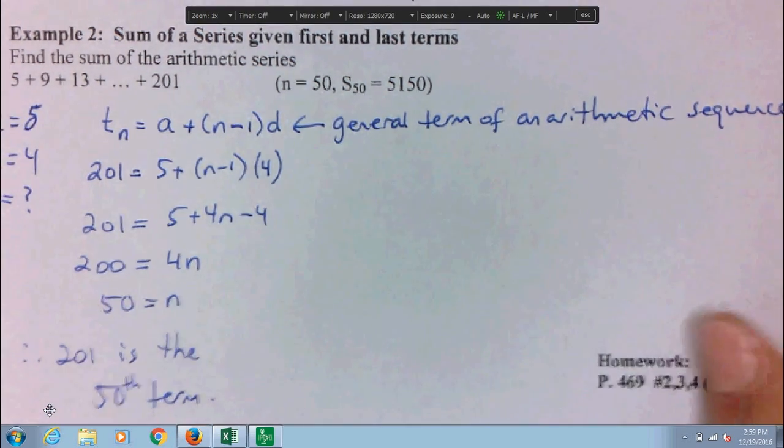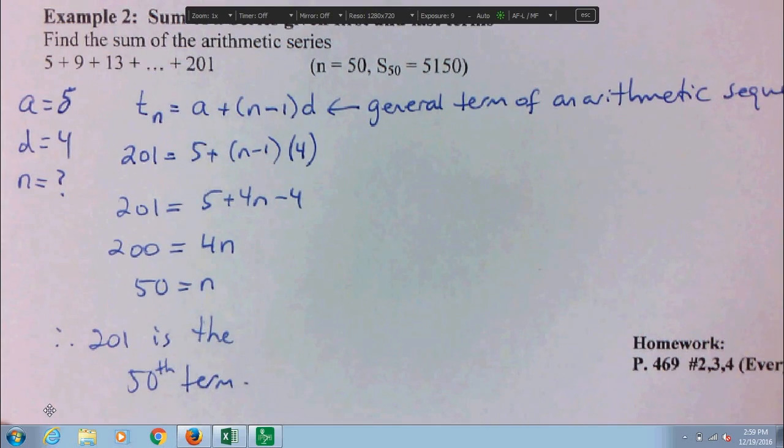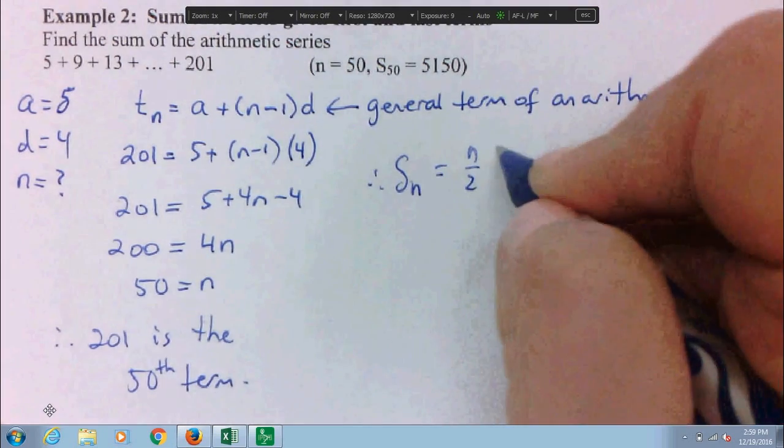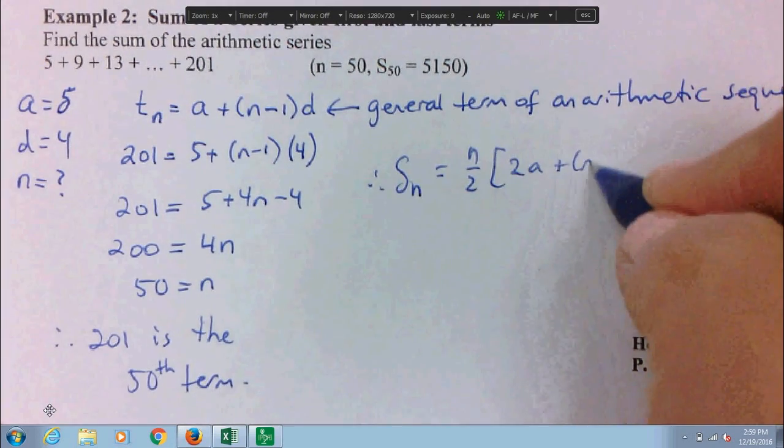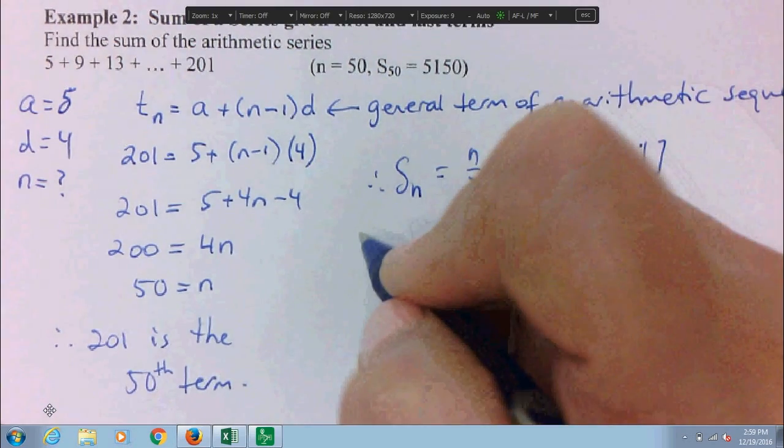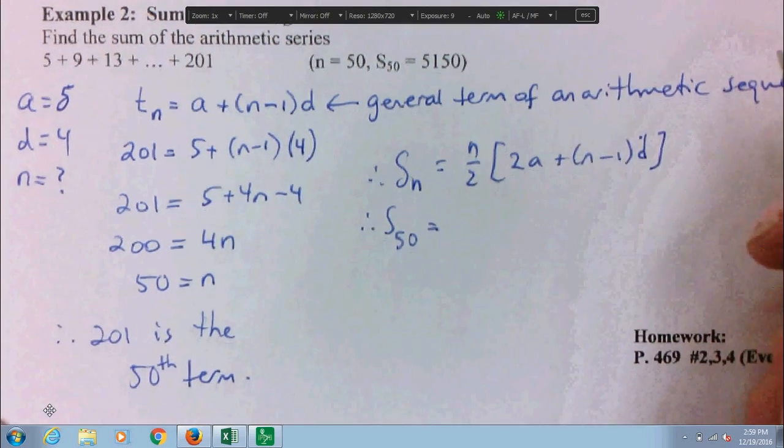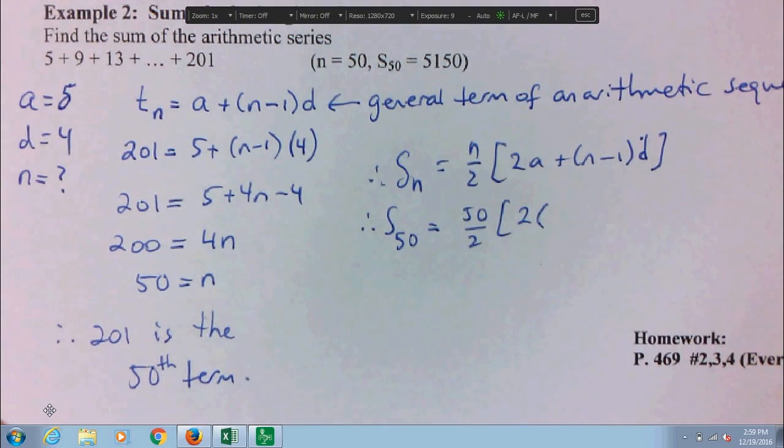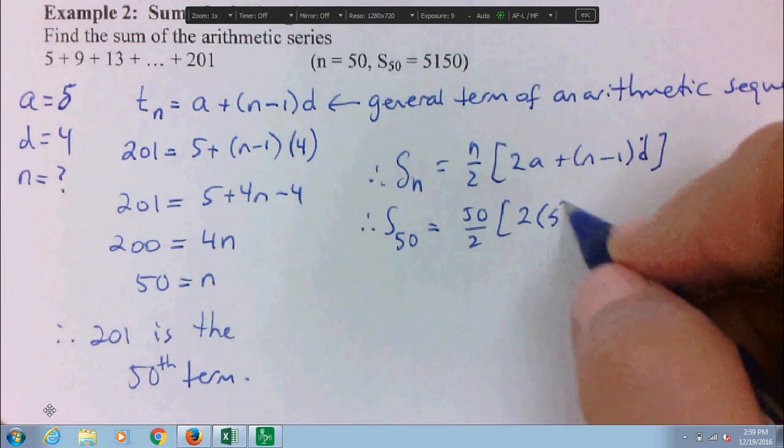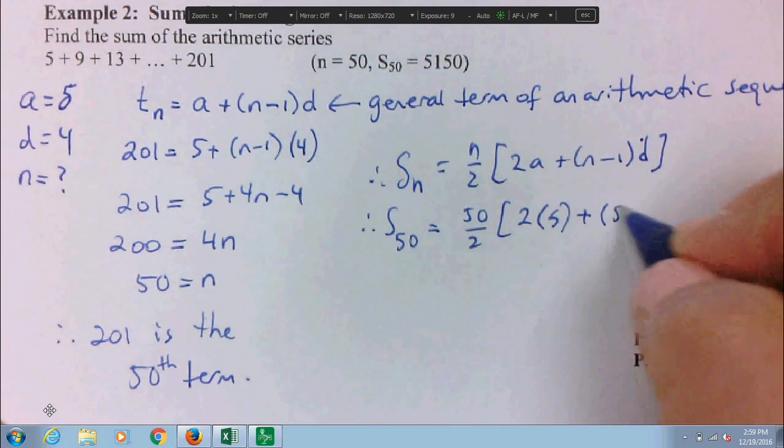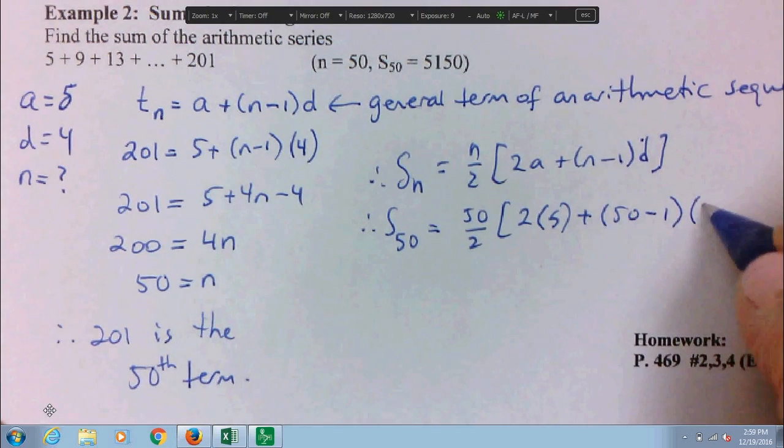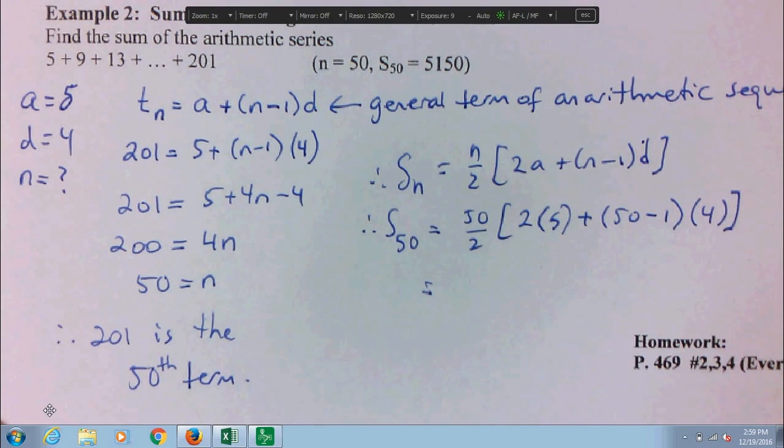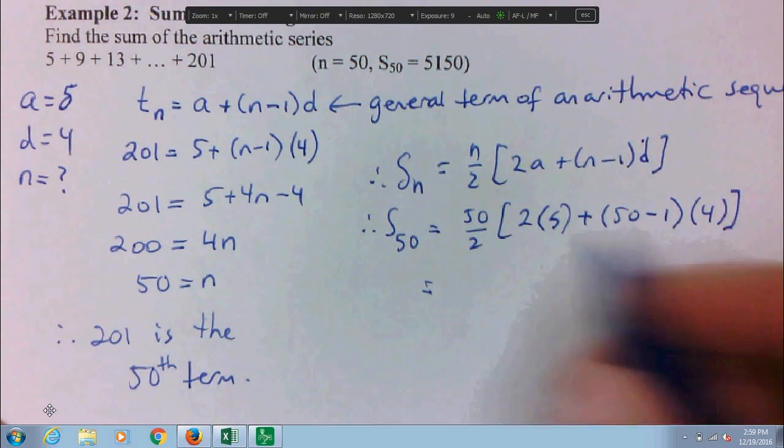So what is the sum of the series then? Well, we know there are 50 terms. So Sn is equal to n over 2 times 2a plus n minus 1d. And therefore S50 is equal to 50 over 2 times 2 times 5 plus 50 minus 1 times 4. You should be able to calculate that. You can pause the video if you want. But it does calculate to 5150.